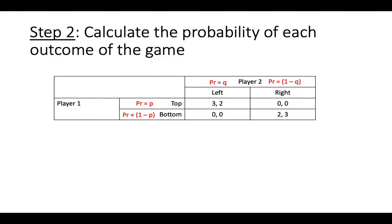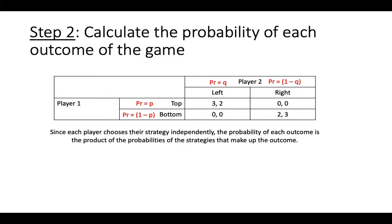The next step is to calculate the probability of each possible outcome of the game. Because each player chooses their strategy independently, the probability of each outcome is the product of the probabilities of the strategies that make up the outcome. This means that the probability of top left is p times q.